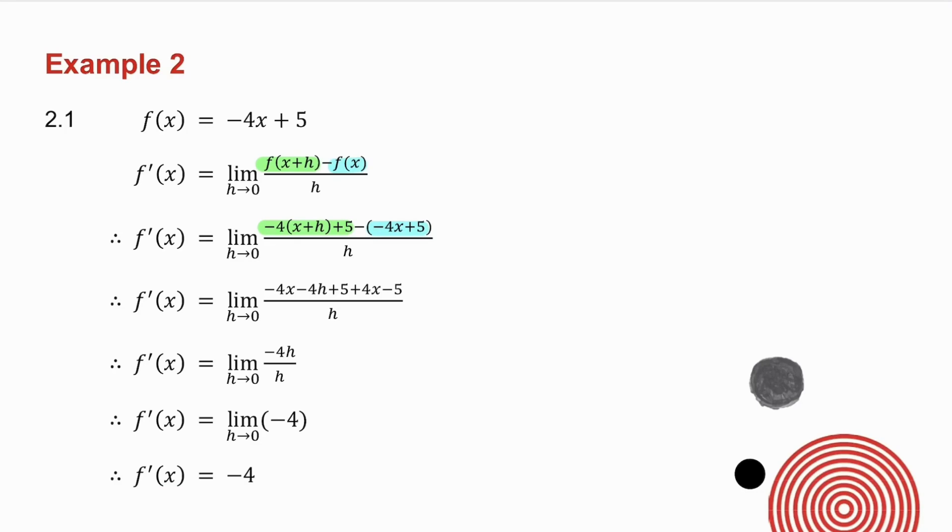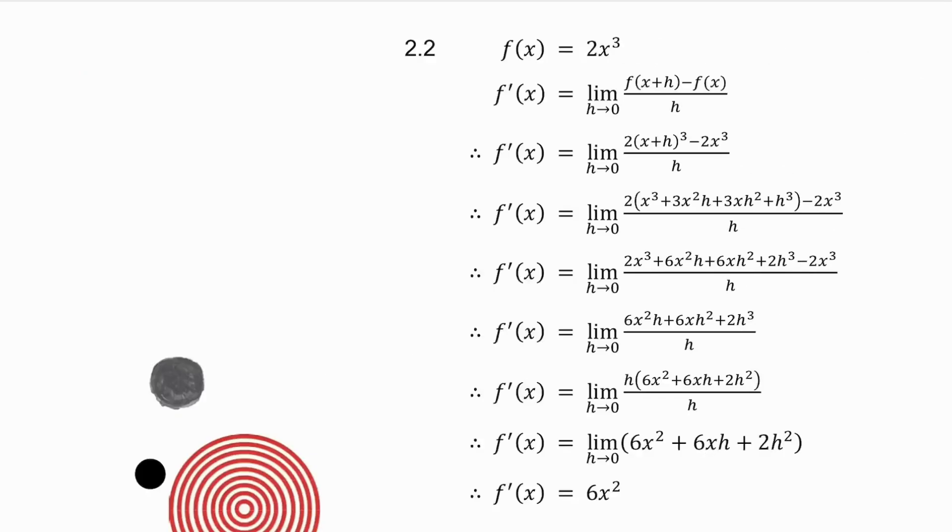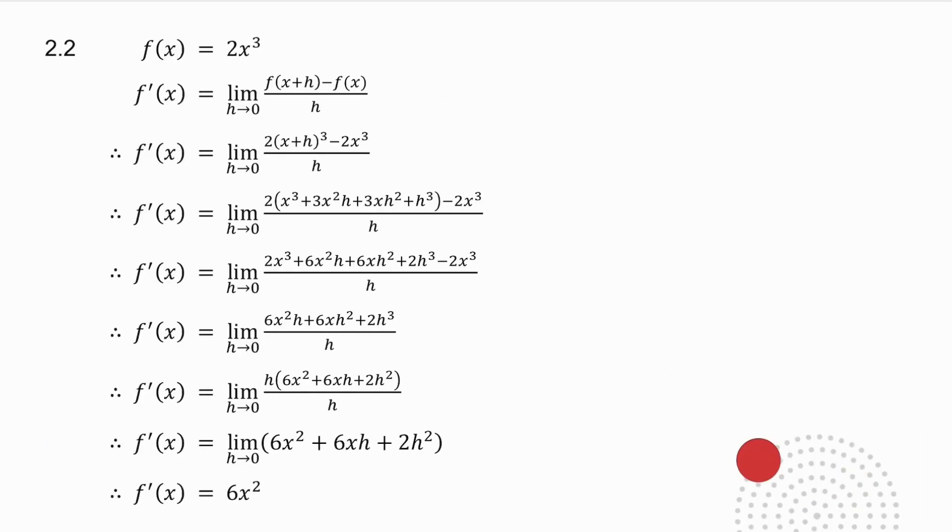What you might want to do now is pause the video, go back and try question 2.2. And then we will do it together. In this one I give you f of x equals 2x cubed. So I'm going to do exactly the same thing. f of x plus h means in place of the x goes x plus h. I then minus f of x which is my original function.